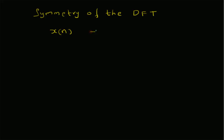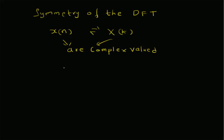Its DFT, x of k — assuming that both x of n and x of k are complex valued — we can write the sequence x of n as a complex representation, that is x of n equals x r of n, which represents the real part, plus j times x i of n, where x i of n is the imaginary component. Let us call this equation 1.